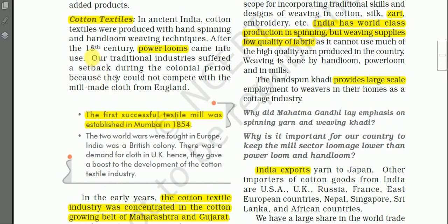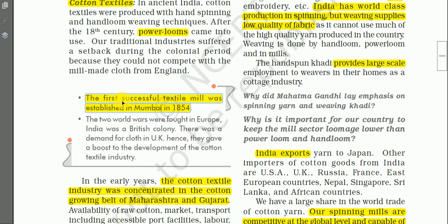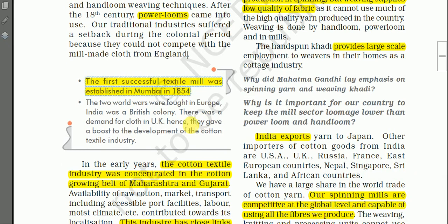In history, our traditional cotton textile industry suffered a setback during the colonial period because it could not compete with mill-made cloth from England. In England, cloth was made using power looms and mills, while in India it was made by hand and hand looms. A very important point: the first successful textile mill was established in Mumbai in 1854. This may be asked in MCQ questions — either the place or the year.